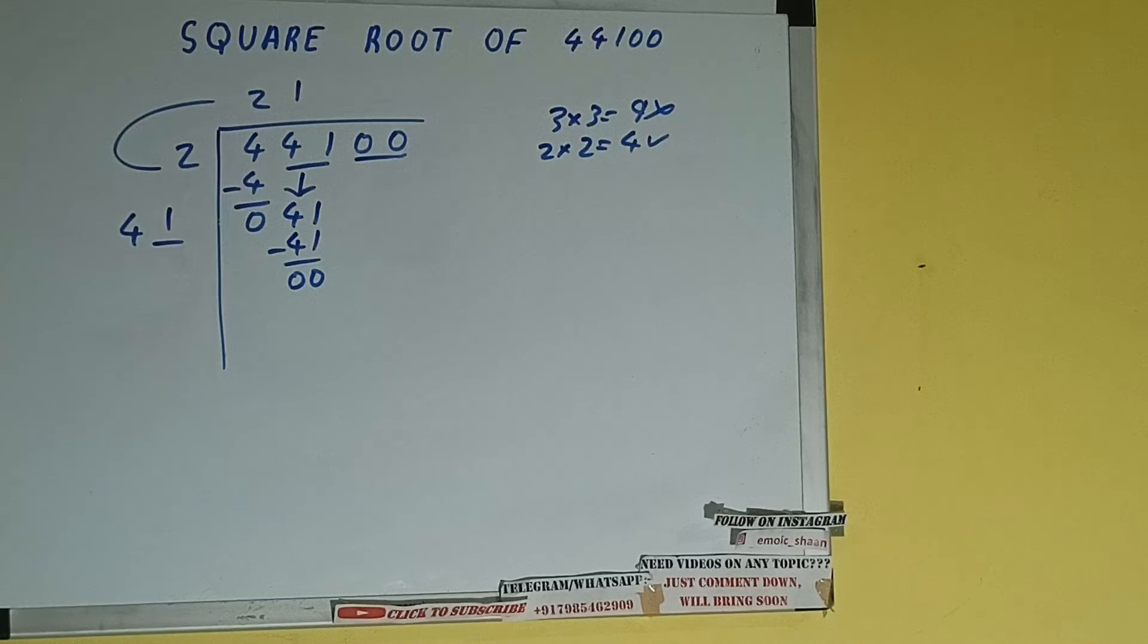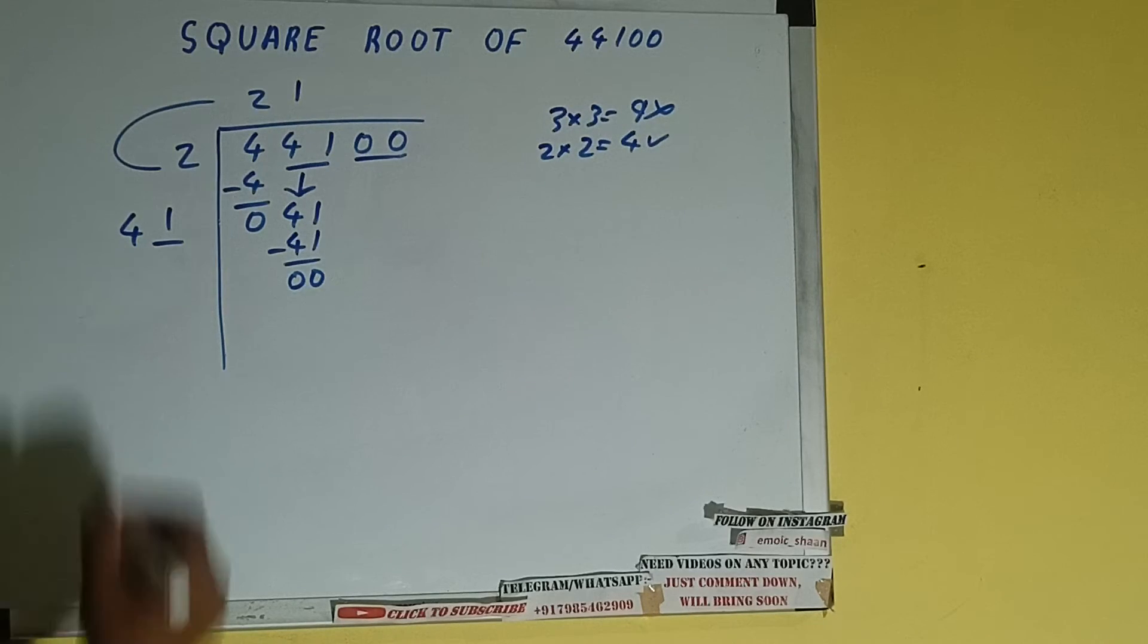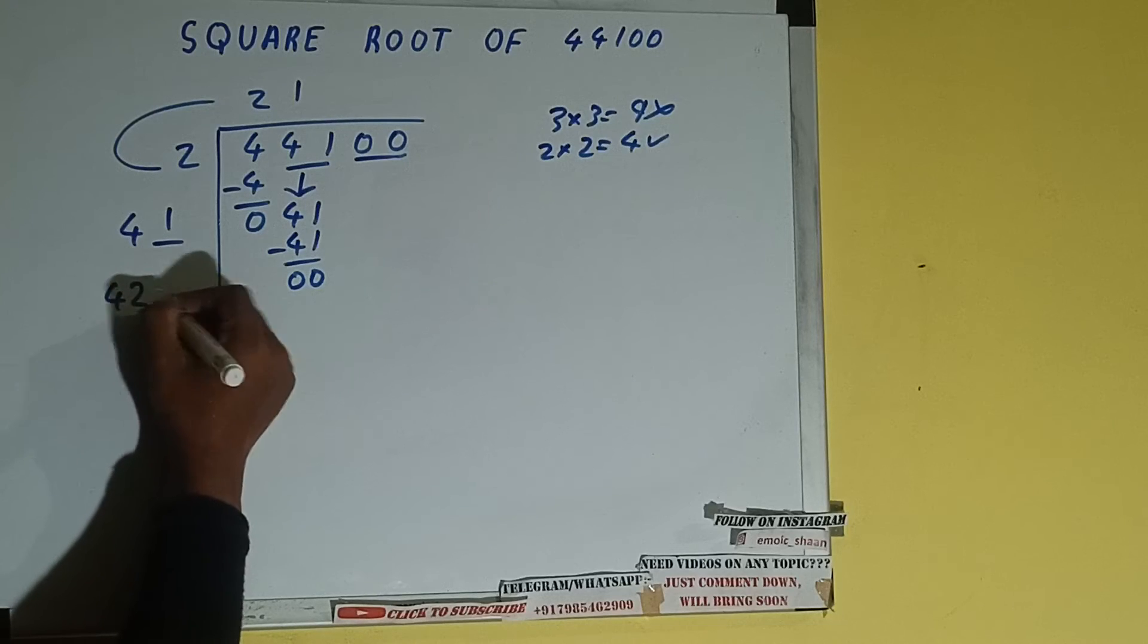Now 41 into 1 we did, so add both. So 41 plus 1 will be 42 and 1 digit extra.